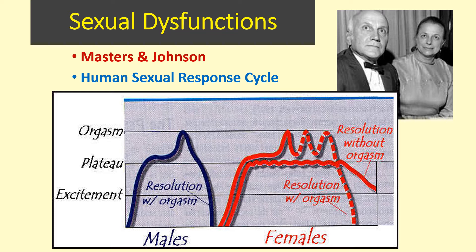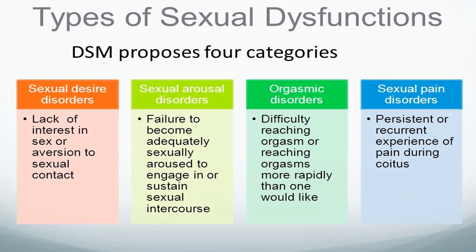There are even movies and TV series based on Masters and Johnson's research. In the DSM, there are four categories of sexual dysfunctions: sexual desire problems, sexual arousal problems, orgasmic disorders — such as a woman who can't achieve orgasm or a man who ejaculates too soon — and pain disorders. Those are the four categories found in the DSM.